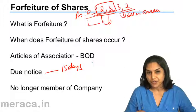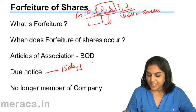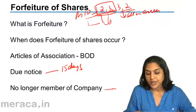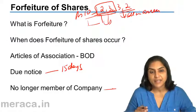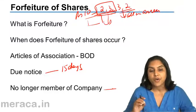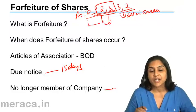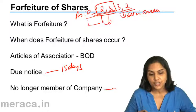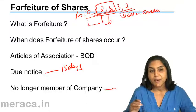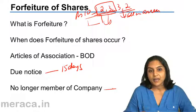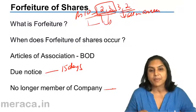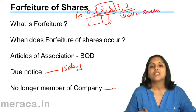Once the shares are forfeited, the shares are cancelled and the shareholder is no longer a member of the company. Forfeiture of a share refers to cancellation of the shares for non-payment of certain installments — non-payment of calls and interest on calls. The money which has been received by the company is retained by the company. That money is forfeited.